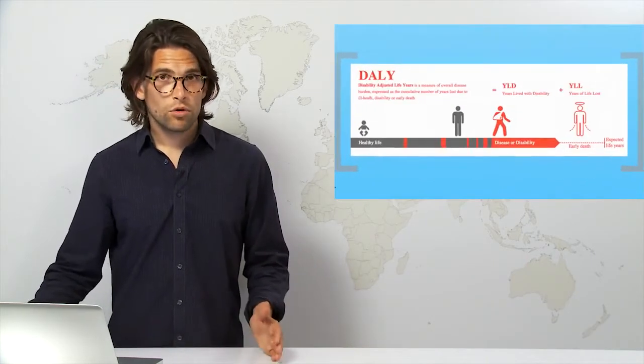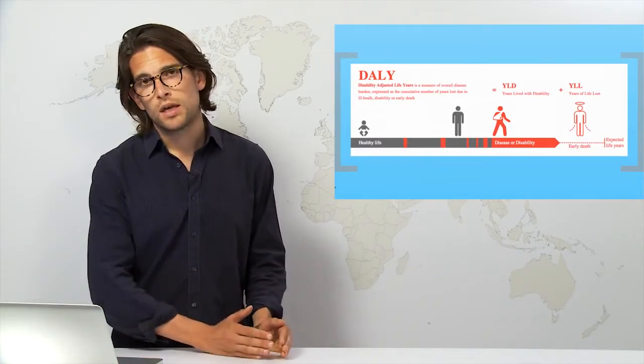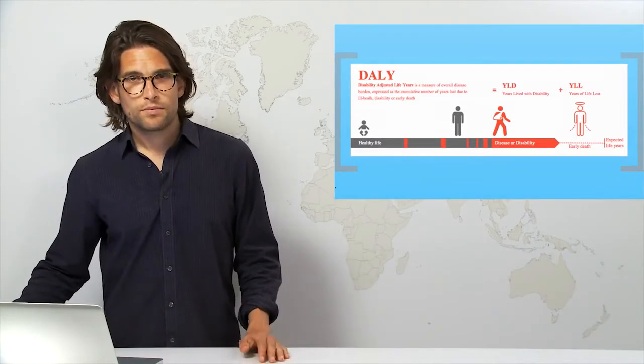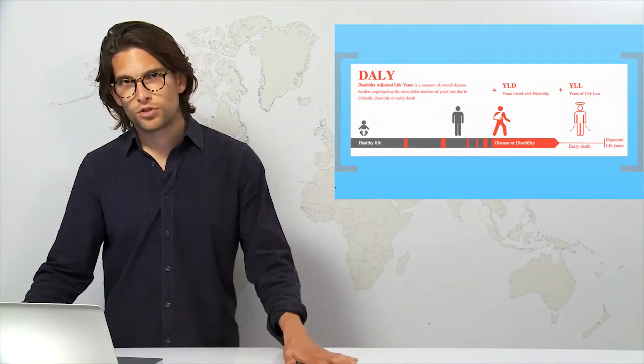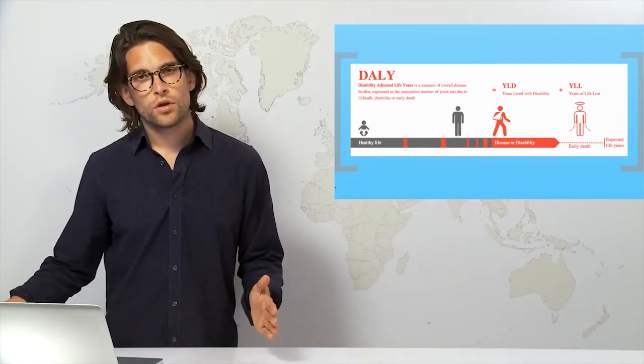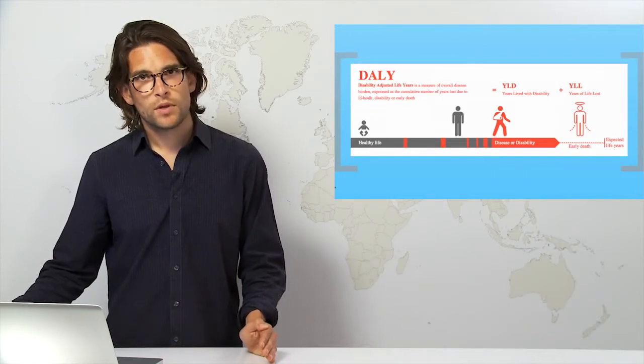That is, a normal healthy life will have a beginning, a middle and an end. If someone dies earlier than expected based on global projections, then we include those years they lost to death.